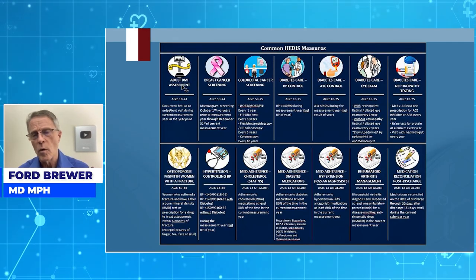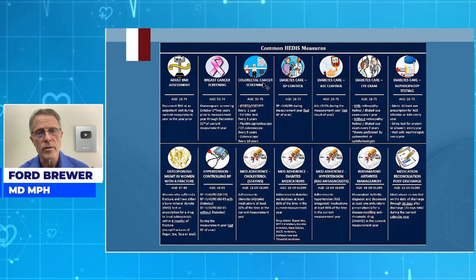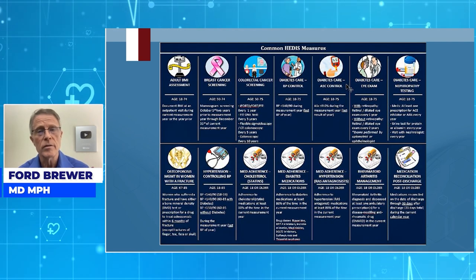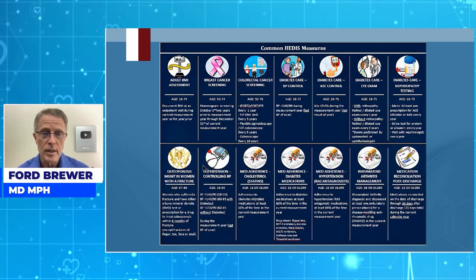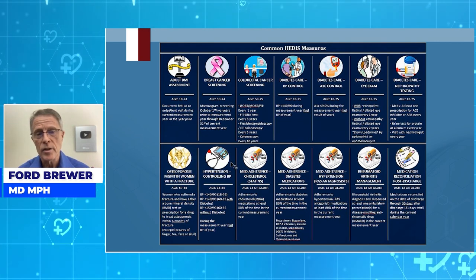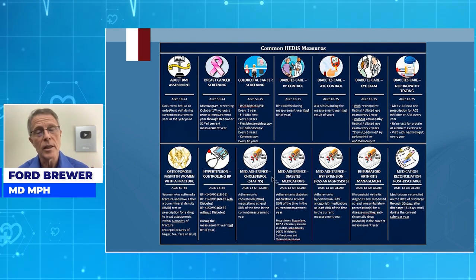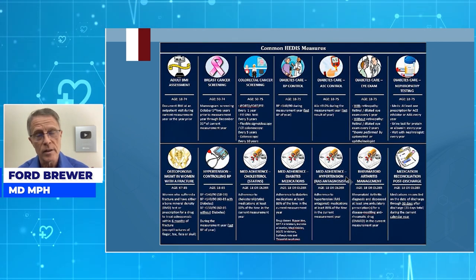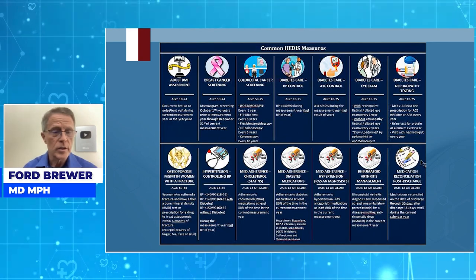Here is a general list of other measures we watch: Adult BMI Assessment, Breast Cancer Screening, Colorectal Cancer Screening, Diabetes Care for Blood Pressure Control, Diabetes Care for A1C Control, Diabetes Care for Eye Exams, Diabetes Care for Nephropathy Testing, Osteoporosis Management in Women with a Fracture, Hypertension Blood Pressure Control, Medication Adherence for Cholesterol, Medication Adherence for Diabetes Medications, Medication Adherence for Hypertension using RAS antagonists — Renin Angiotensin System antagonists — Rheumatoid Arthritis Management, and Medication Reconciliation post-discharge.